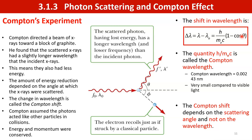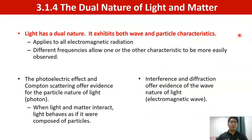The next topic is the dual nature of light and matter. Light has a dual nature — it exhibits both wave and particle characteristics, which applies to all electromagnetic radiation. Different frequencies allow one or the other characteristic to be more easily observed. The photoelectric effect and Compton scattering offer evidence for the particle nature of light, while interference and diffraction provide evidence for the wave nature of light.